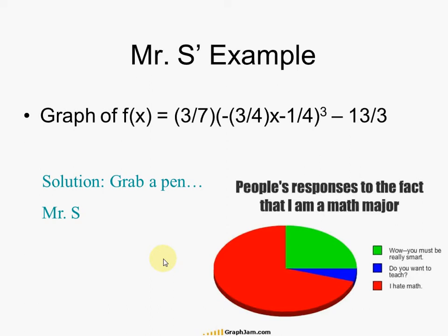And then we'll do this example. Three over seven times, inside the parentheses, this coefficient — and then minus one fourth — I will do this for you.